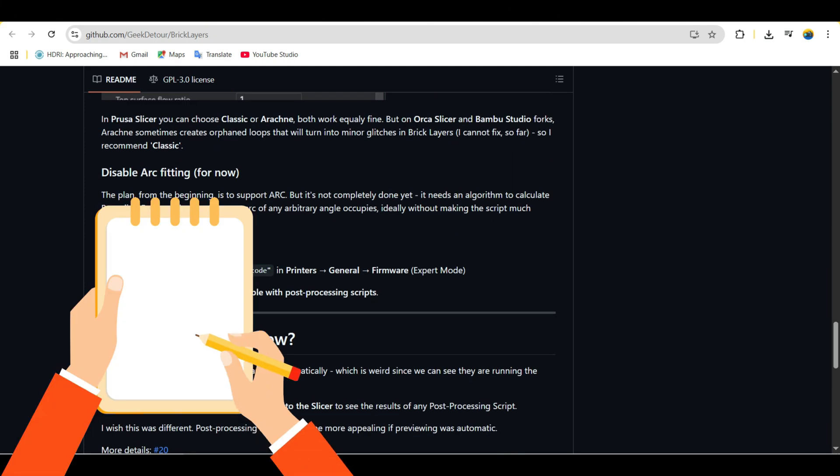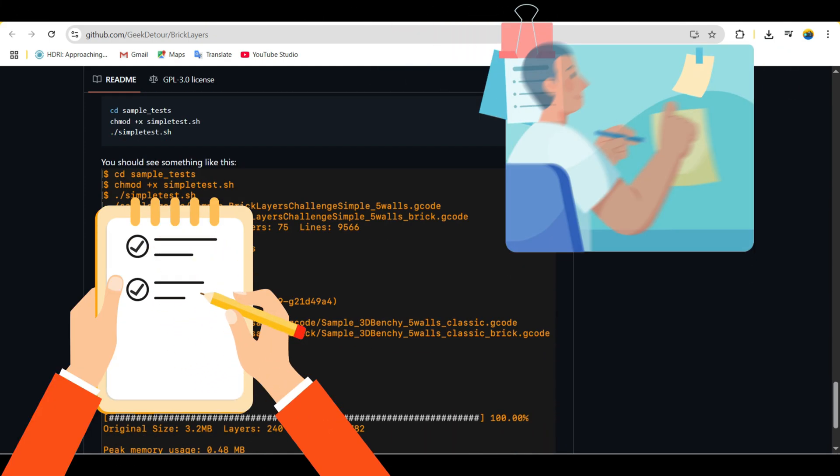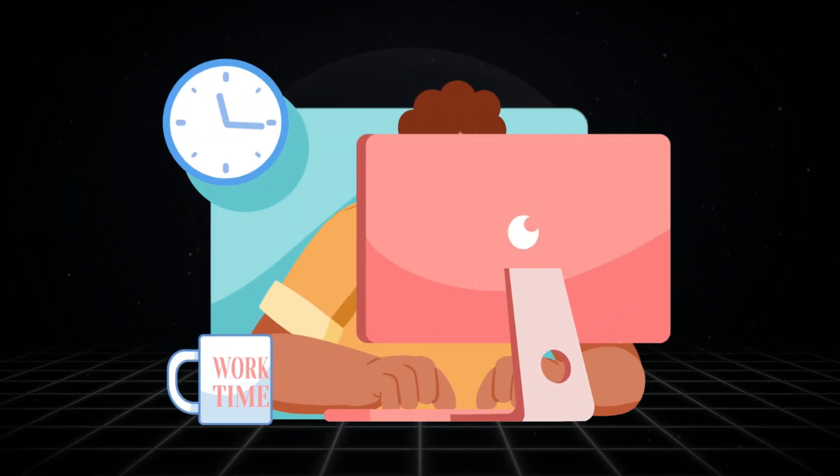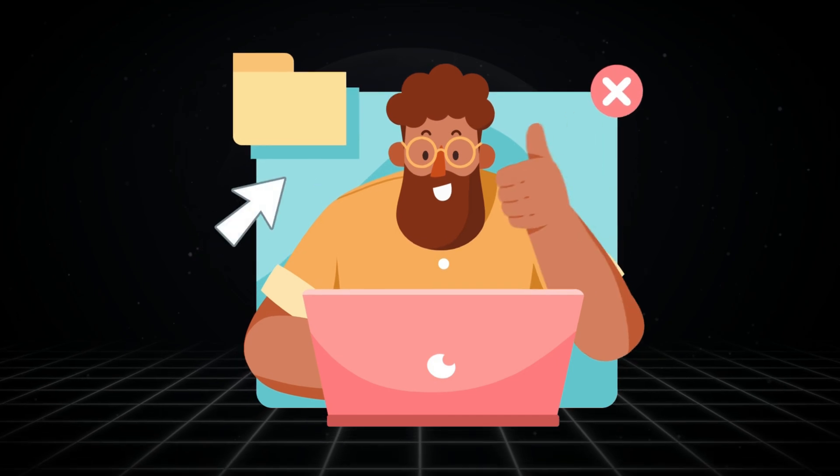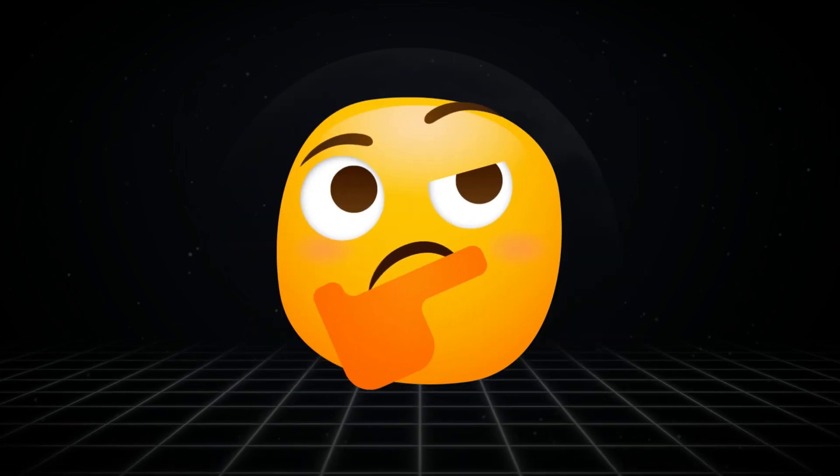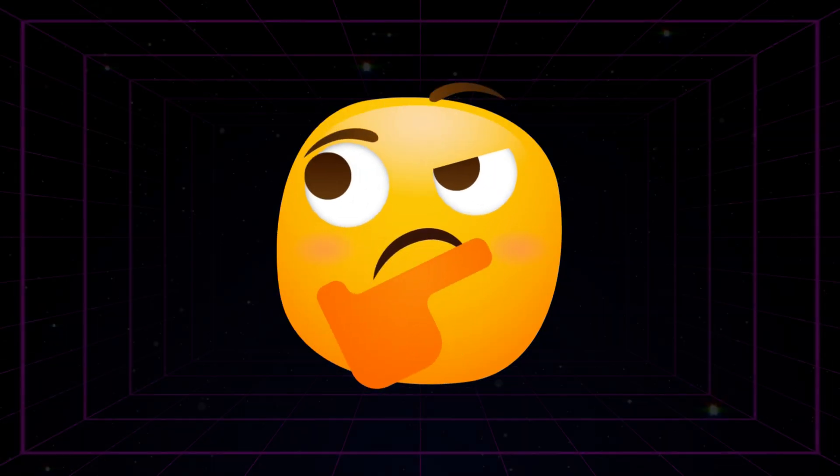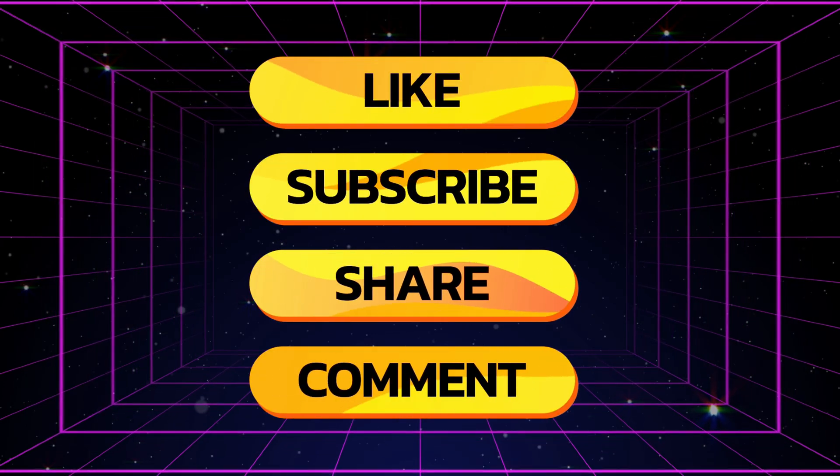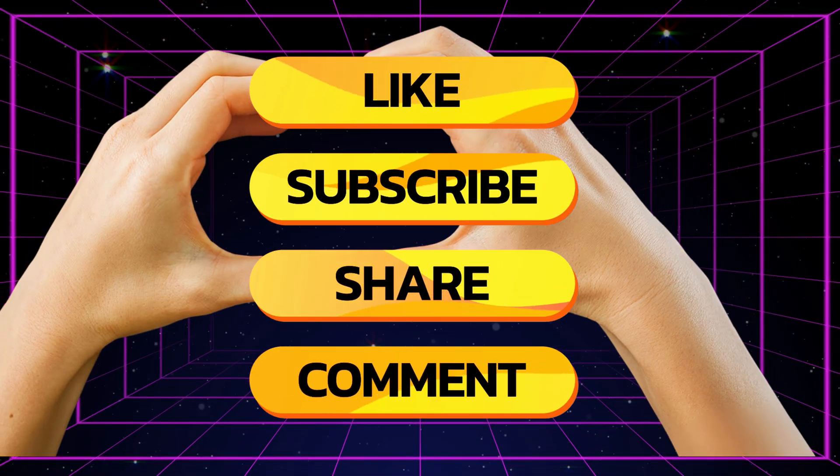So yes, brick layer slicing works, but it's legally hidden in plain sight. Unless you build it yourself, you probably won't see it in your slicer anytime soon. Want a full tutorial on how to enable and tune it? Drop a comment below. And don't forget to like and subscribe, because you deserve better tools.